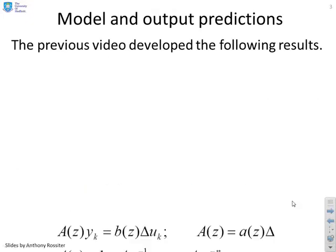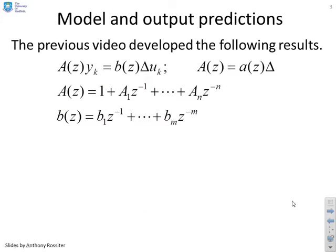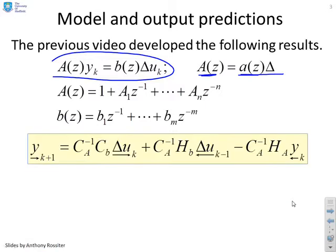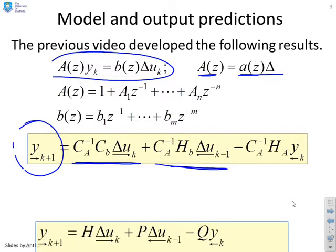The previous video developed the following results. If you had an incremental model, capital A Y equals B delta U, where capital A was the original denominator times delta, then you could show that a vector of predictions Y future K plus one could be given by expressions of this form. You'll see we've got CA inverse CB times delta U future, CA inverse HB times delta U past, and CA inverse times HA times Y past.